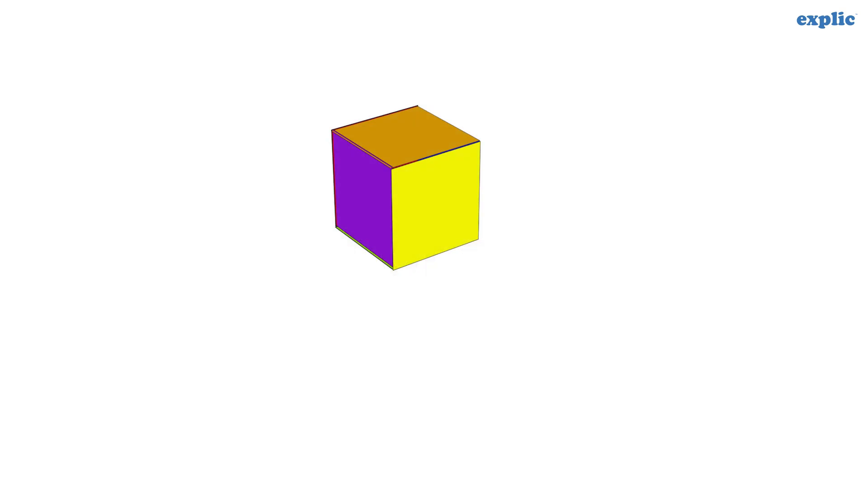A cube is a special type of cuboid. A cube is made of six equal squares.